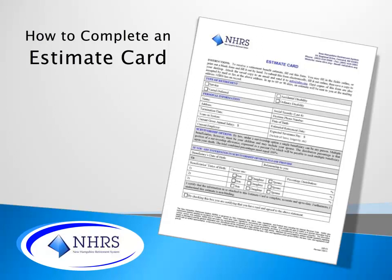Curious as to what your pension amount may be at retirement? Complete and submit an estimate card. NHRS will calculate an estimate based on the information you provide. The estimate will be sent to your mailing address on file. We strive to get an estimate out to you within 15 days. On the following slides, we'll show you how to fill out each section of the estimate card.